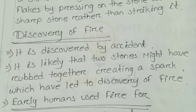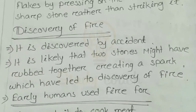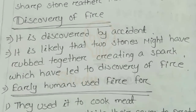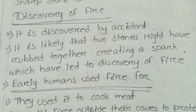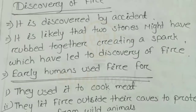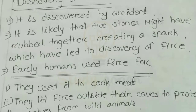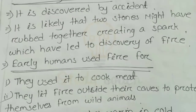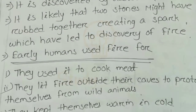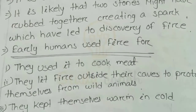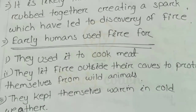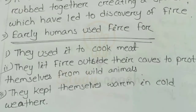Next is the discovery of fire, which happened accidentally. It is likely that two stones might have rubbed together creating a spark, which led to the discovery of fire. This proved very useful to early men. They used it to cook meat, light fire outside their caves to protect themselves from wild animals, and kept themselves warm in cold weather.